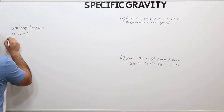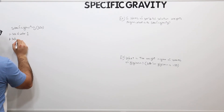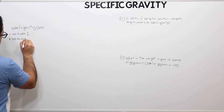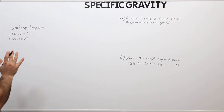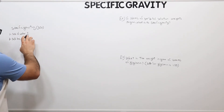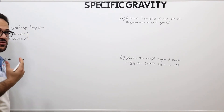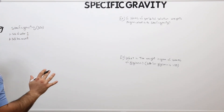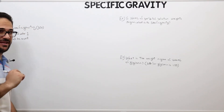Number two: specific gravity has no unit — it's basically unitless. This is the reason why number one has no unit associated with it. So now let's look into what is the formula for specific gravity.